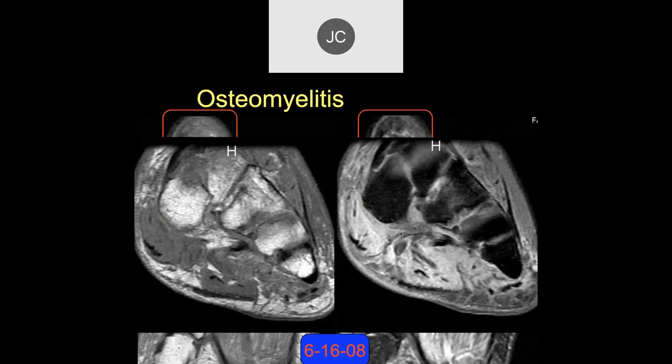In this case, we can see fluid in that tendon sheath. One important thing about amputations of the foot is you have to pick the right level in terms of the patient's ability to walk thereafter. The radiologist has to give the surgeon an idea of what level to pick depending on where the infection has gone.